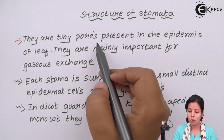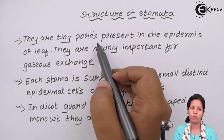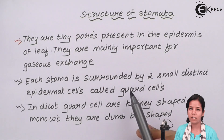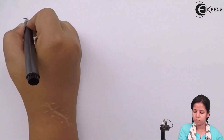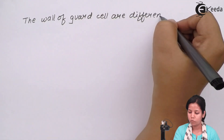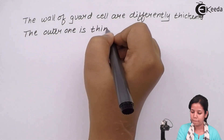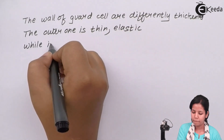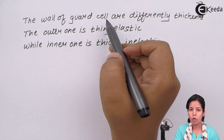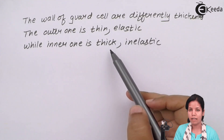Structure of stomata: stomata are tiny pores present on the upper surface of a leaf, important for transpiration and photosynthesis. Each stoma is surrounded by two distinct epidermal layers which are guard cells. Guard cells can be of different shapes in different plants. The outer wall is thin and elastic while the inner one is thick and inelastic.